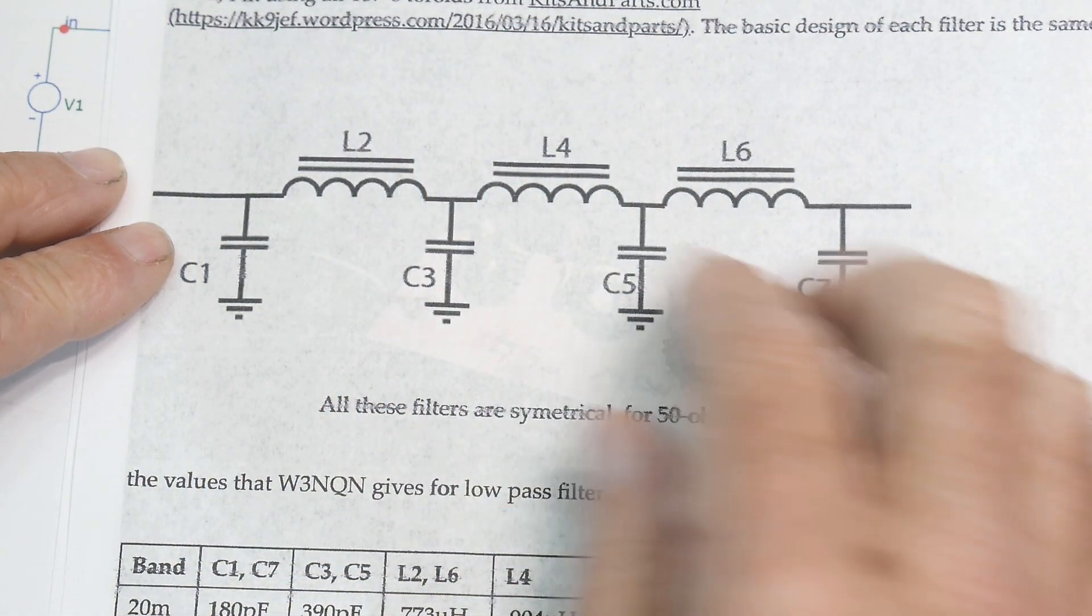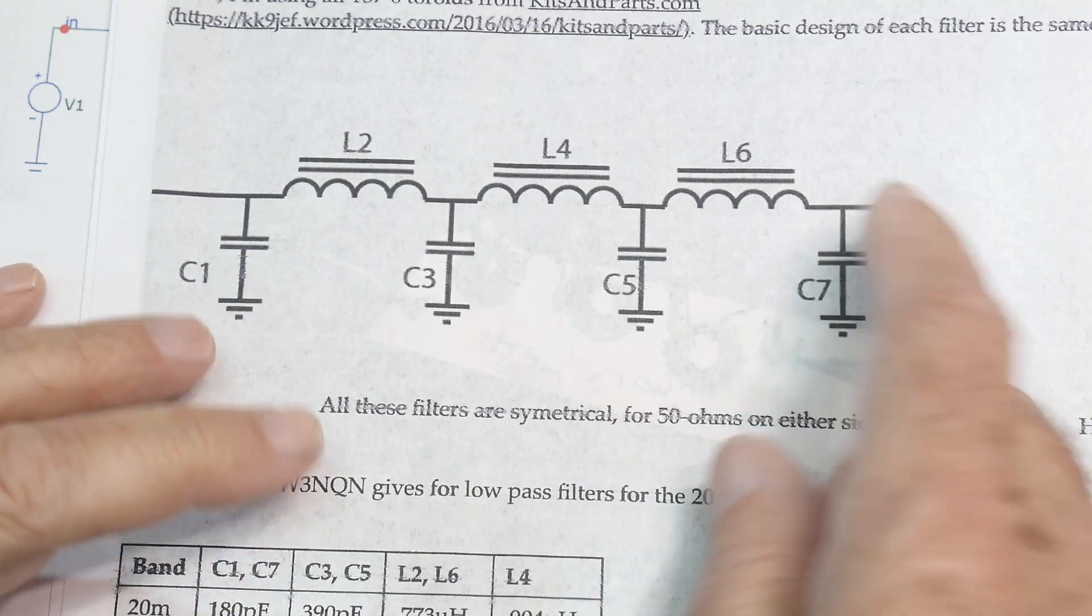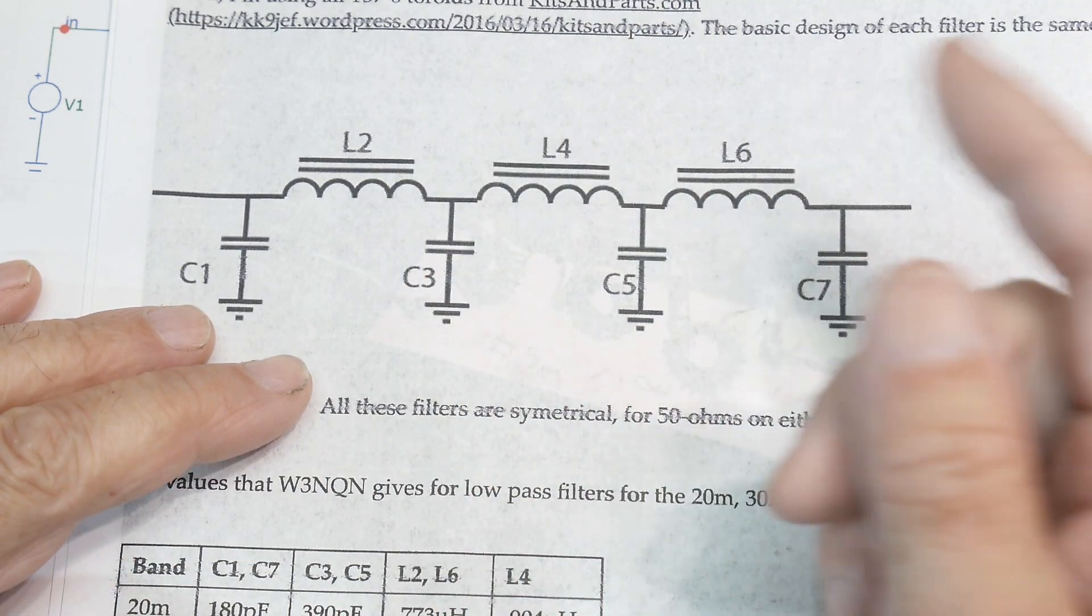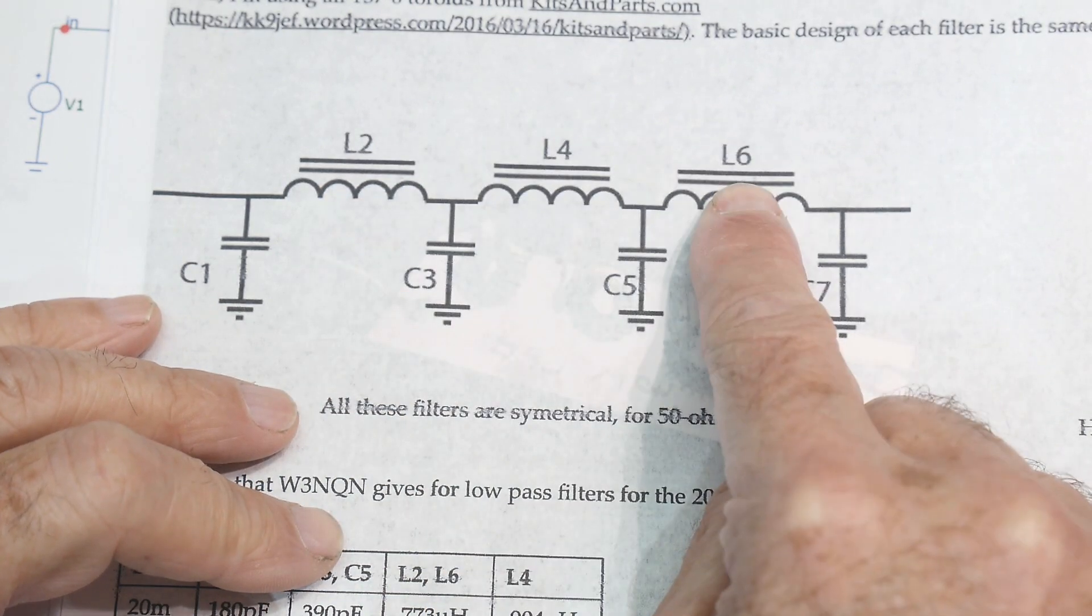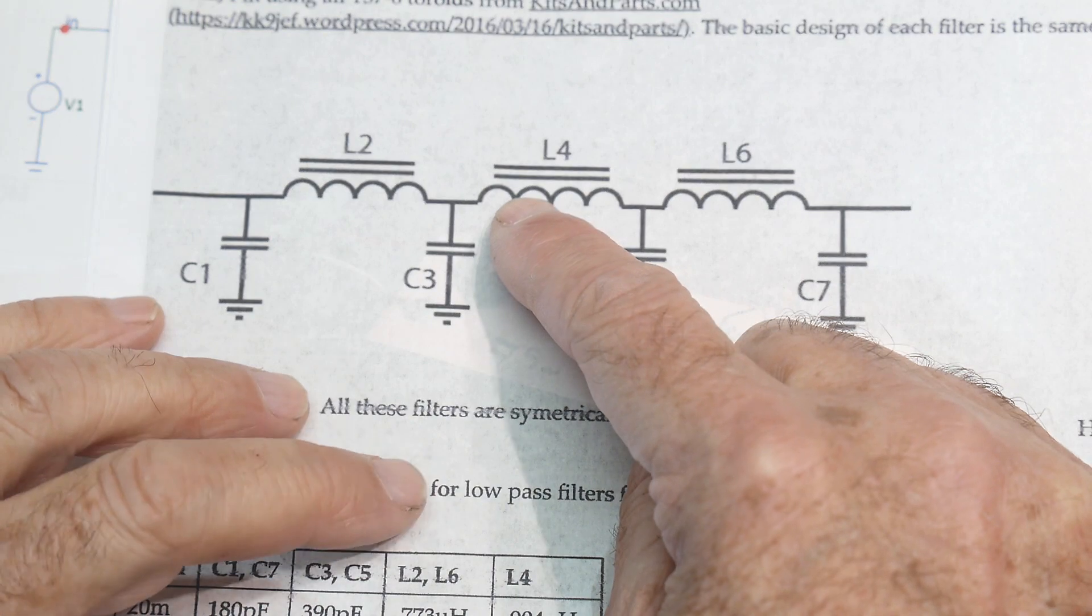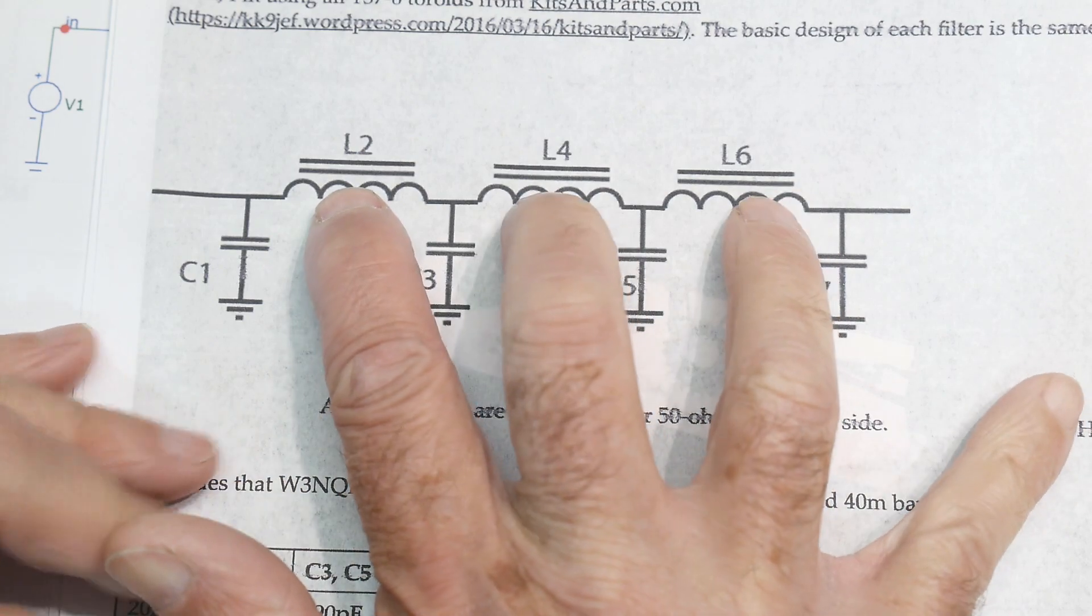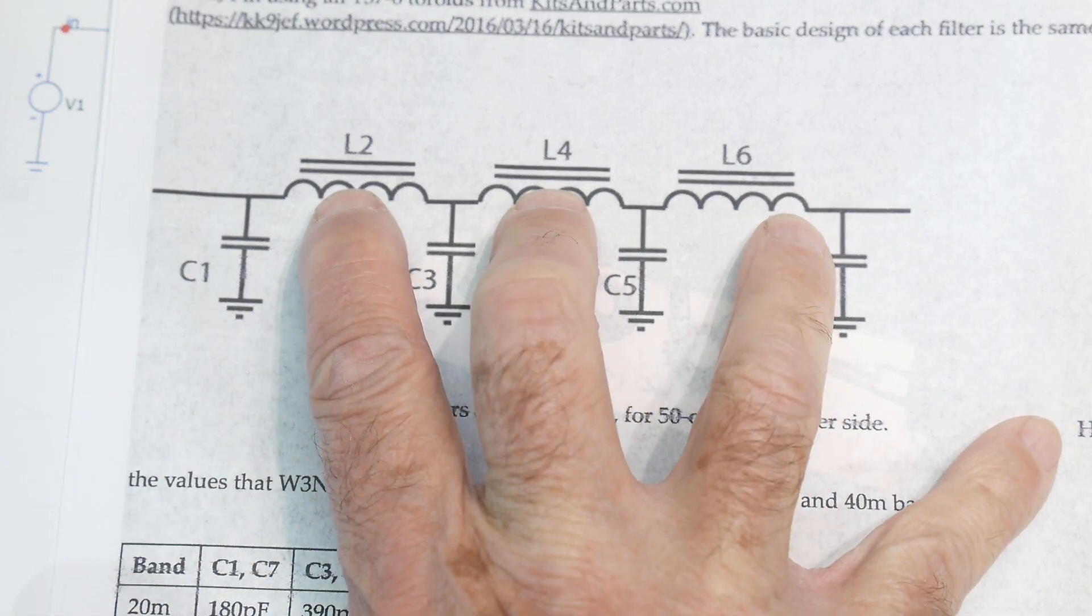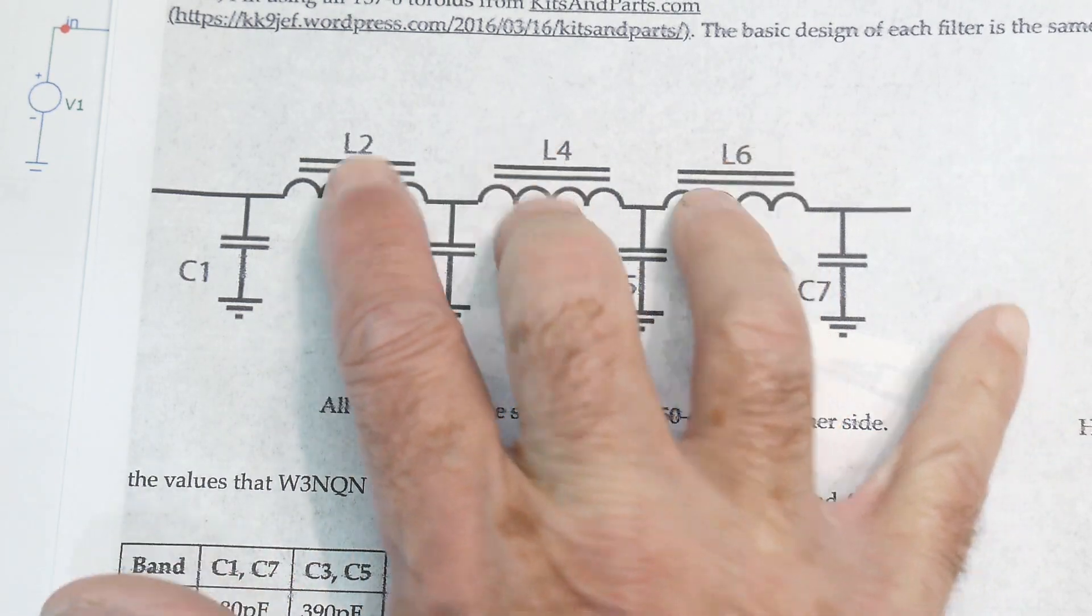I was looking at this filter, the one I was copying. His values here are 1.38 microhenries, 1.38 microhenries, and 1.698 microhenries. So 1.4, 1.4, and 1.7—they're not a lot apart. I was wondering how close they really have to be.